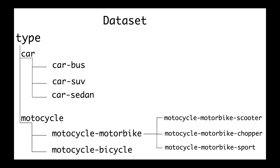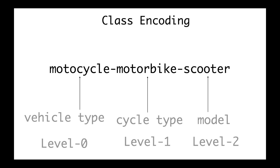If you go deeper into the hierarchy — for example under motorcycle-motorbike — you have scooter, chopper, and sport motorbike. The folder names would then be motorcycle-motorbike-scooter and motorcycle-motorbike-chopper. This subfolder name contains information about the parent folder and the grandparent folder as well. Even if you go deeper at any level, you know the whole hierarchy from the name of the class alone, keeping track of all ancestor class names.